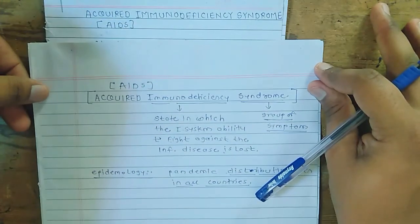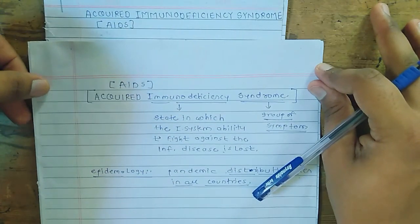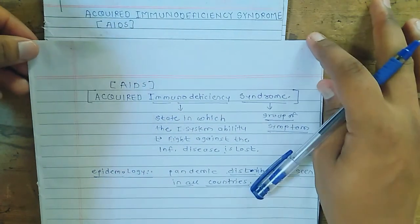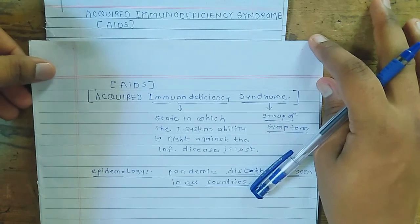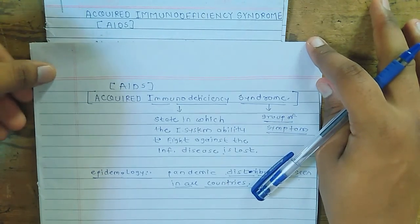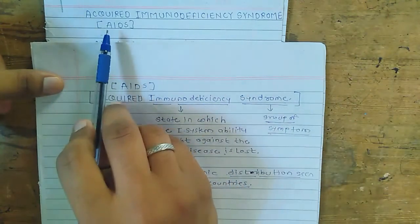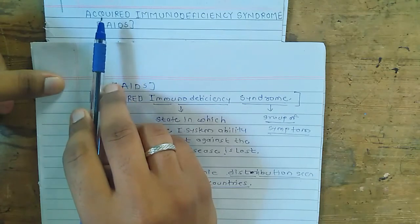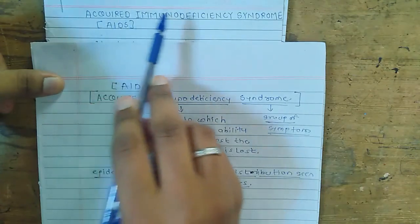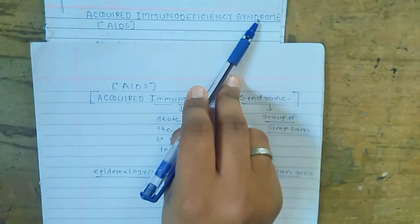Good morning friends. My name is Ashwant Chinshanek and today we are going to discuss about AIDS. First of all, the full form of AIDS is Acquired Immunodeficiency Syndrome.